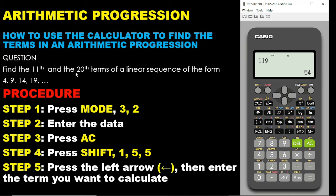The next step is to find the 20th term. On this same interface, use the left arrow key to move up, then delete the 11 since we are done with the 11th term. Now enter the number 20 and press equals. So the 11th term was 54 and the 20th term is 99. This is the simple way of using the calculator to look for terms in an AP. Once again: press Mode, option 3, option 2, enter your data, press AC, then Shift 1, 5, 5.